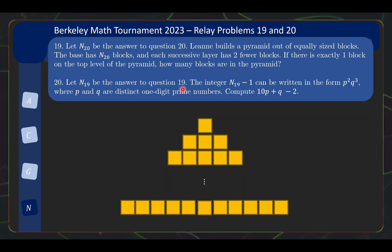And question 19 is used in formulating question 20. Let N19 be the answer to question 19. The integer N19-1 can be written in the form p²q³, where p and q are distinct one-digit prime numbers. Compute 10p + q - 2. So this is pretty crazy because the answer to this is used in question 19, and the answer to question 19 is used in question 20. How do we go about solving both problems at the same time?